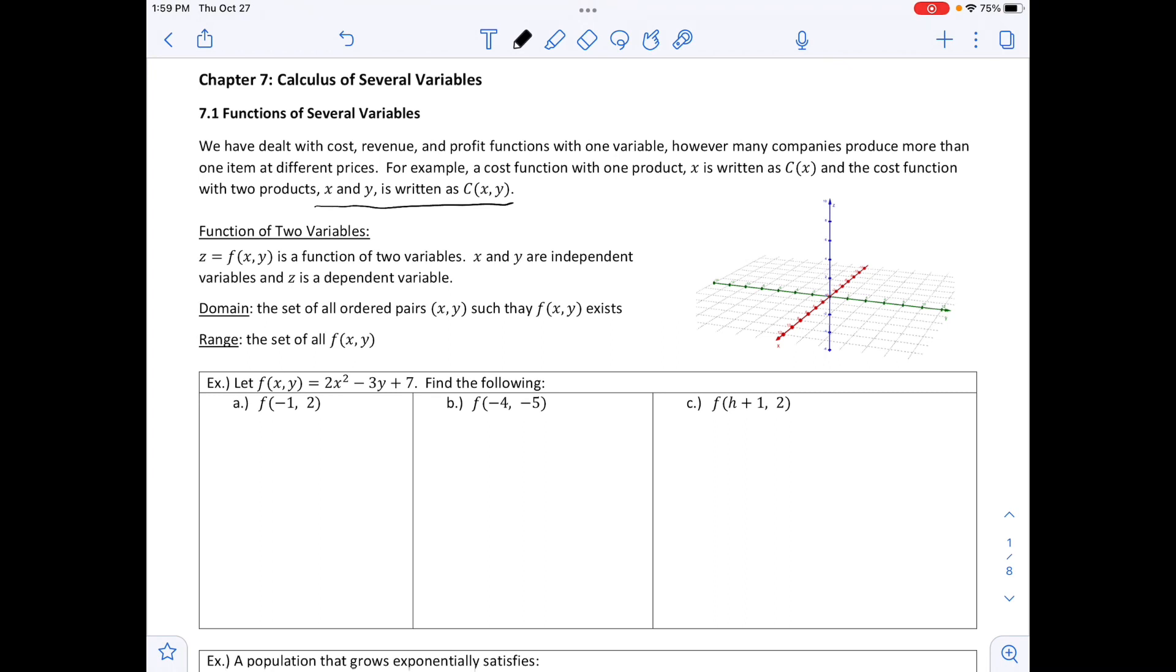So next thing it says is Functions of Two Variables. Z equals F of X, Y is a function of two variables. X and Y are independent variables, and Z is our dependent variable. We have a domain, it's going to be the set of all order pairs X, Y, such that F of X, Y exists. And the range would be the set of all of our Z values, or F of X, Y.